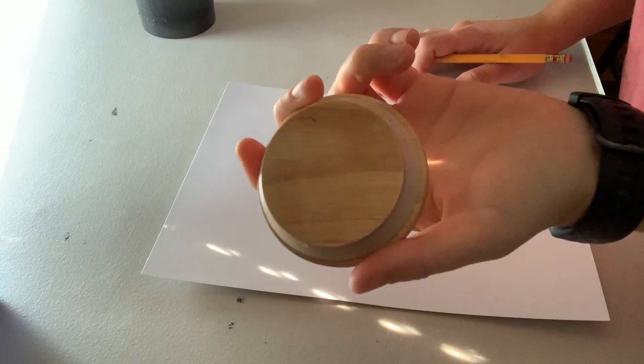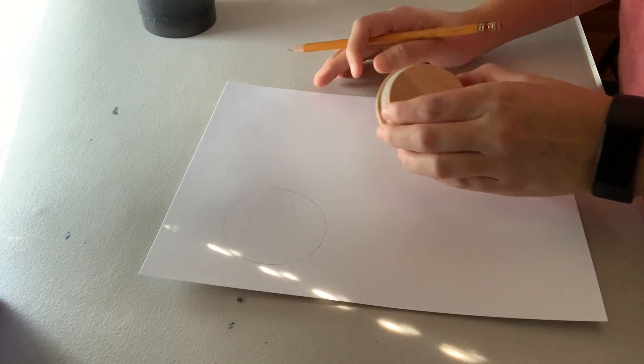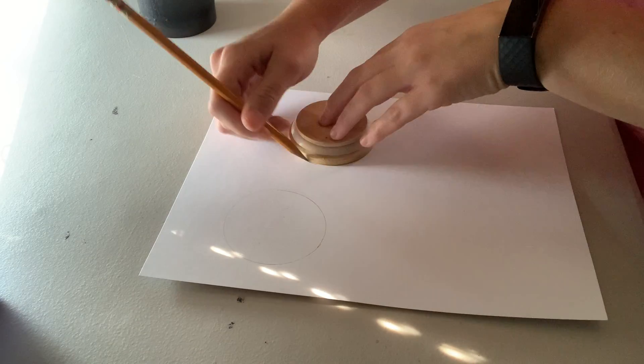To begin, find something circular to trace. It can be anything in the shape of a smaller circle, like a cup. Trace four circles on your paper.